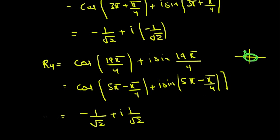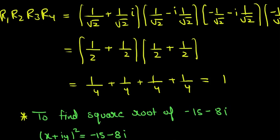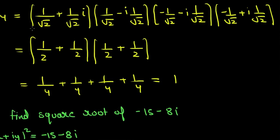Now we have to show that R1 × R2 × R3 × R4 = 1. We observe that R1 and R2 are of the form (a + b)(a − b), and similarly R3 and R4. Using (a + b)(a − b) = a² − b², and since i² = −1 this gives a² + b². Solving, we get (1/4 + 1/4) × (1/4 + 1/4) = 1/2 × 1/2... actually 1/4 + 1/4 + 1/4 + 1/4 = 4/4 = 1. So the product is 1, completing the five-marks question.